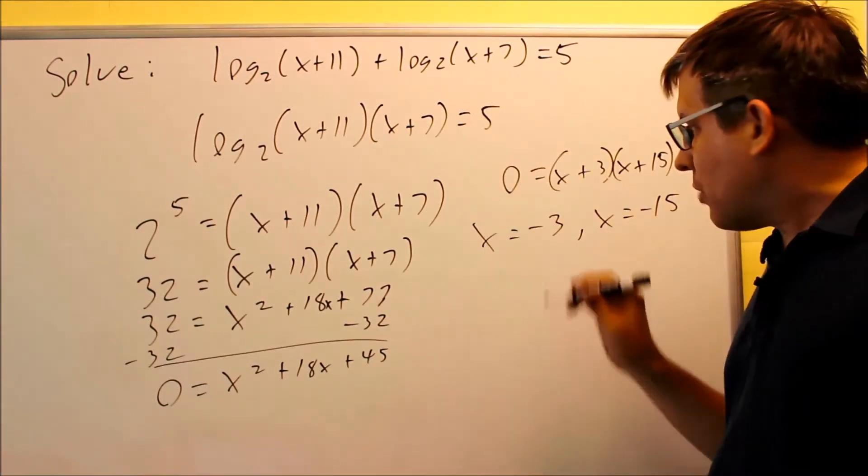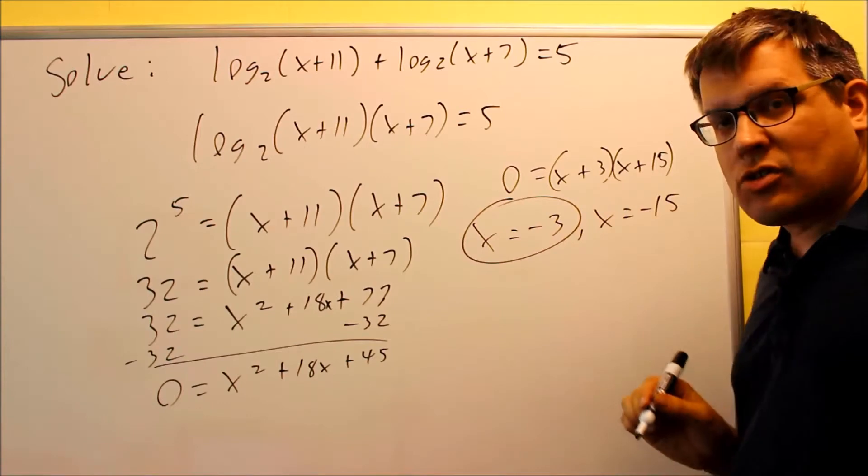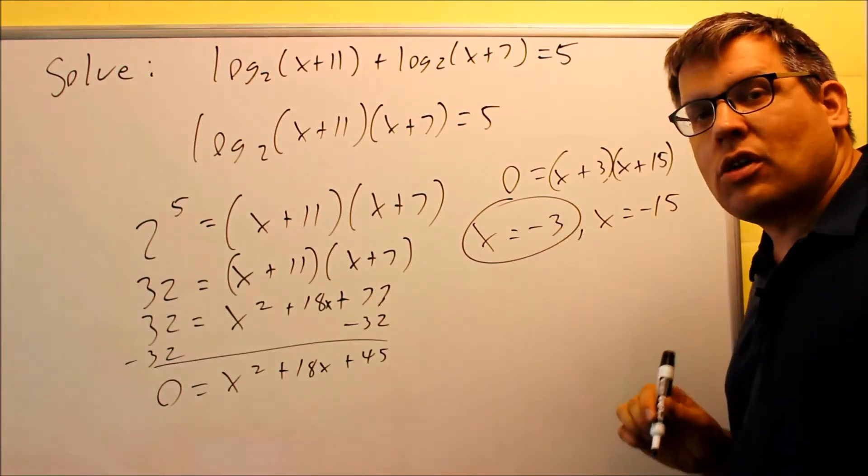Negative three plus seven, also a positive number, so there we go, that's one of our answers. We know for sure that x equals negative three, that's okay.